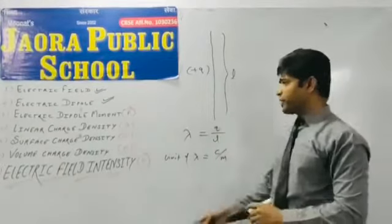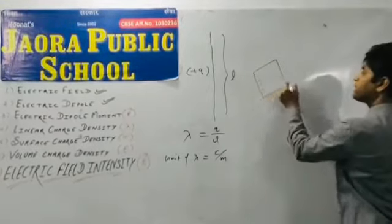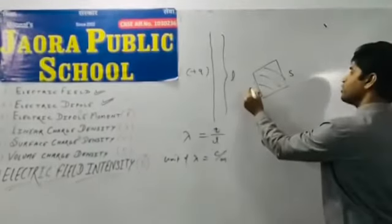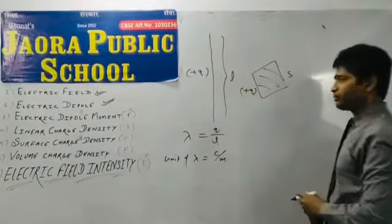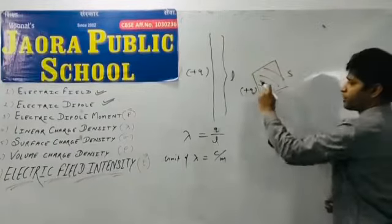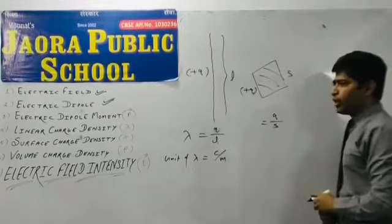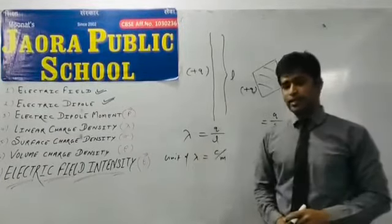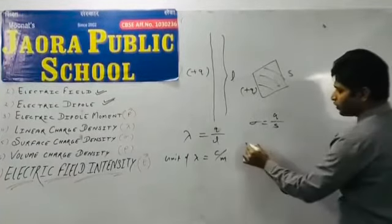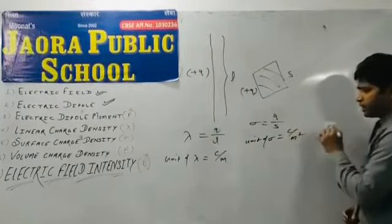Now, our next definition, surface charge density. Like, a sheet or plane surface of surface area S, is charged by plus q charge. Then, charge present on unit surface area of the sheet is q upon S. This ratio is called surface charge density, denoted by sigma. And unit of sigma is coulomb per meter square.